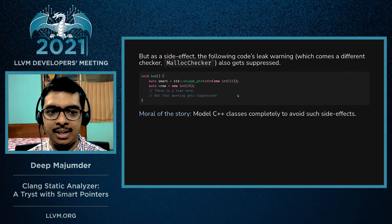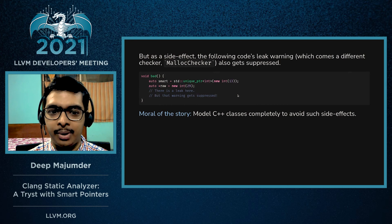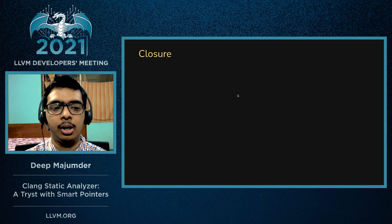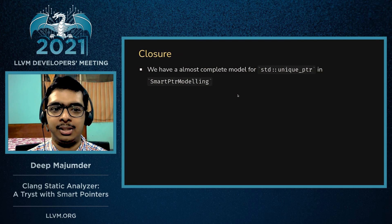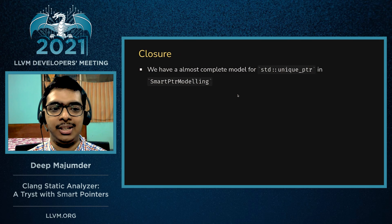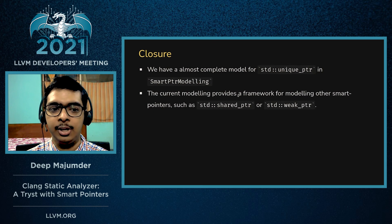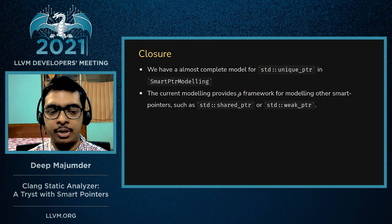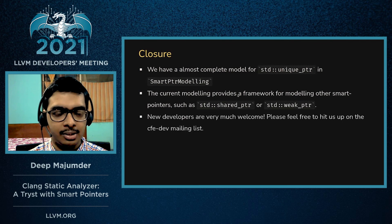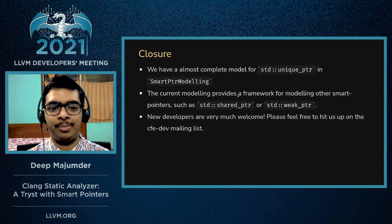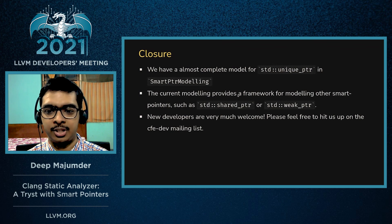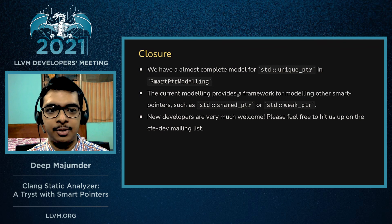The moral of the story is: if you're going to model a C++ class in the CSA, you have to model all parts of it to avoid such side effects. As a closing note, we now have an almost complete model for std::unique_ptr in the CSA, and the way modeling has been done provides a framework for modeling other smart pointers like std::shared_ptr and std::weak_ptr. These will be things to work on in the future to extend the checker and make it more complete. New developers are very welcome — if you want to join in this process, please feel free to reach out on cfe-dev. Thank you for listening.